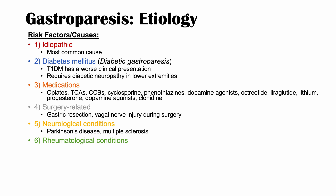The sixth main category is rheumatological conditions, including scleroderma and amyloidosis. Scleroderma causes gastroparesis through collagen deposition, while amyloidosis causes it through deposition of amyloid proteins, both causing issues with neural input to the stomach.